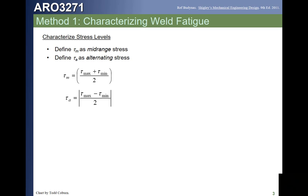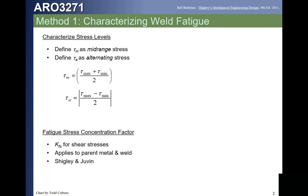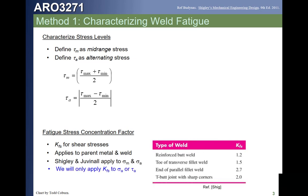Since many welds will be fillet welds and we idealize them as carrying only shear stresses, you'll notice there is no stress concentration factor shown on those stresses. That's because we're only going to apply the stress concentration factor to the alternating component of the shear stress. Here are some typical stress concentration factors for welds. The first is for a reinforced butt weld. The next is 1.5 for the toe of a transverse fillet weld — that small arch-like spot at the toe of the fillet.